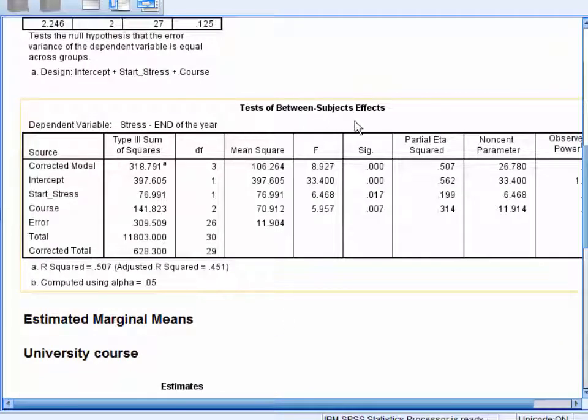Next, the Tests of Between Subjects Effects table presents our main ANCOVA results. Here, we can see that the covariant, stress at the start of the year, is significantly related to our dependent variable, stress at the end of the year.